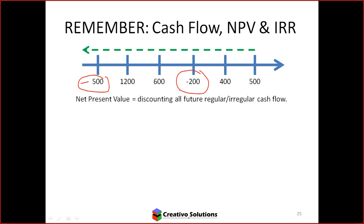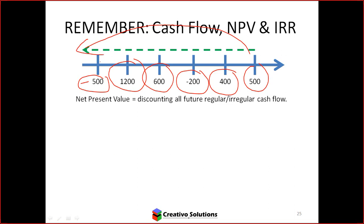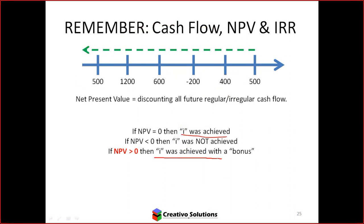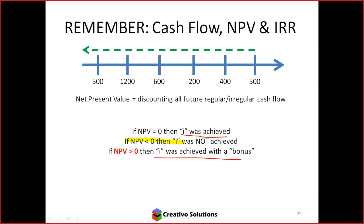Net present value is today's worth — in simple terms, what something is worth today. You take everything in the future, discount it back in time. If net present value is positive or equal to zero, the required return is achieved. We only reject if NPV is less than zero — then we're not creating value. Value is only created if NPV is greater than zero.